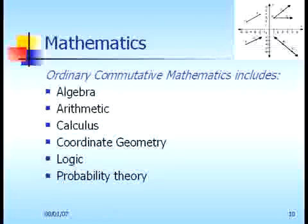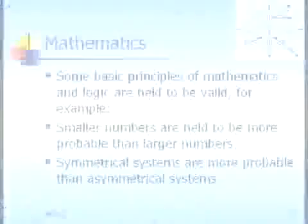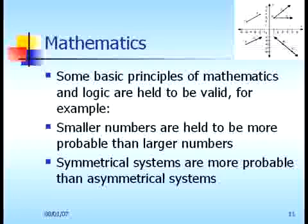Coming next to the phrase ordinary commutative mathematics. This includes algebra, arithmetic, calculus, coordinate geometry, logic, and probability theory. All of these are very well known branches of mathematics and form a part of ordinary commutative mathematics. Throughout the development of this reciprocal system, we maintain some basic principles of mathematics and logic. For example, smaller numbers are held to be more probable than larger numbers, and symmetrical systems are more probable than asymmetrical systems.